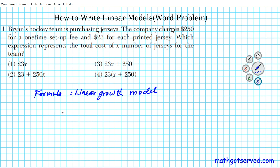The formula is as follows: the function f(x) is equal to the unit cost — that is, the cost for each additional unit — multiplied by X, plus the base cost.